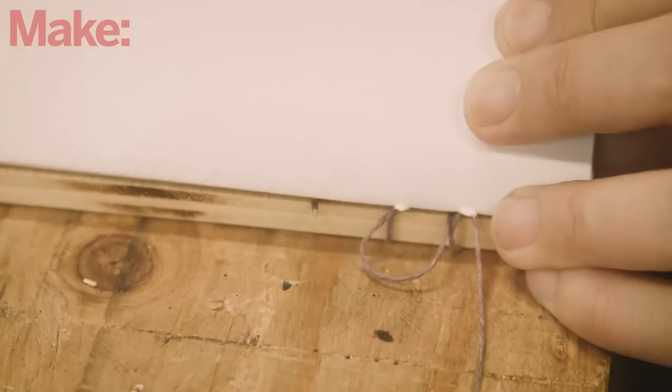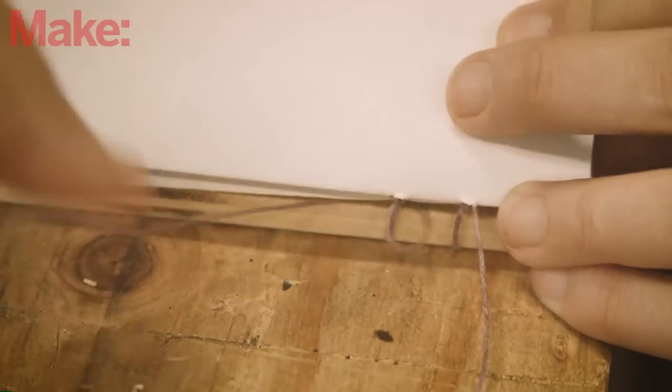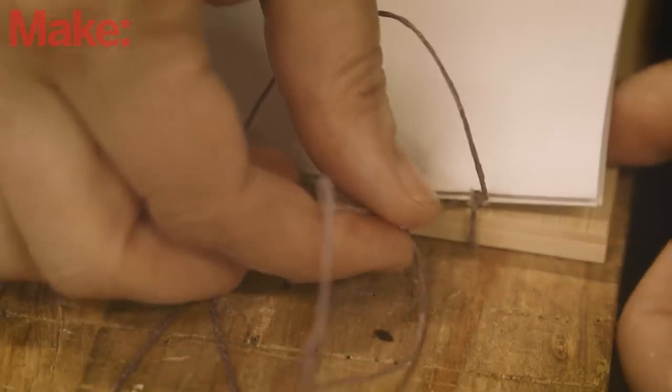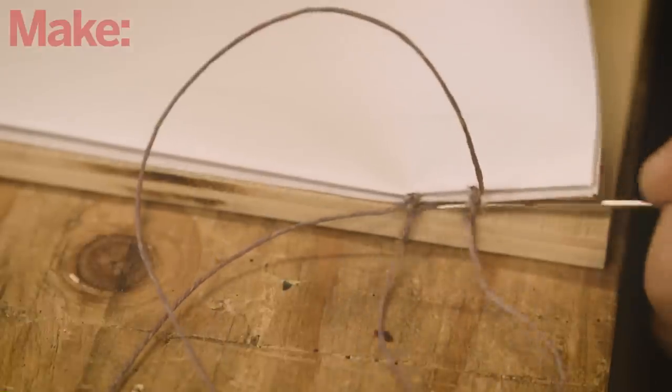Thread the needle in the middle of your hinge. Wrap it around the thread in an outside motion. Pull tight and repeat with all four needles. Now you can continue on with the next signatures.